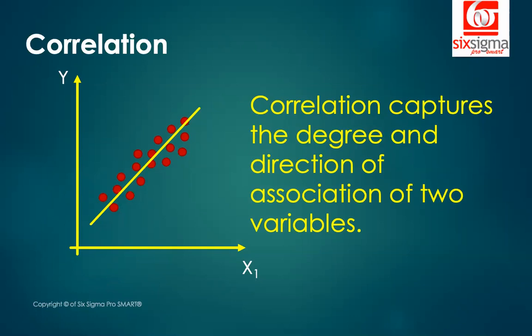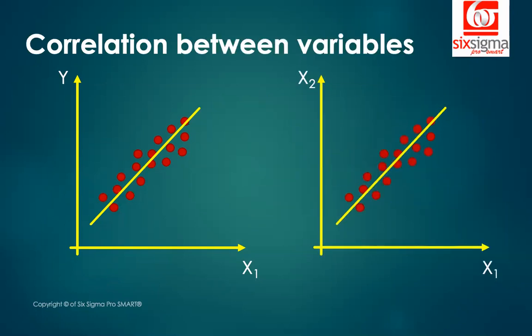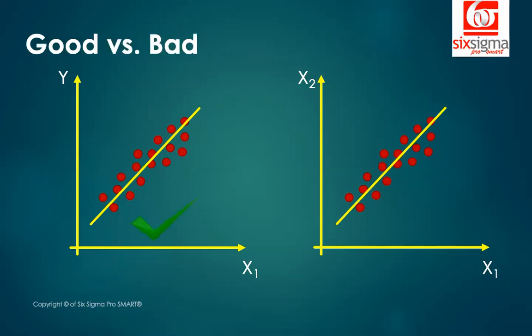We understand what correlation is, but do we treat it differently when we talk about correlation between y and x versus two independent variables? The fact is that we are always very happy to see a correlation between an outcome of interest and an explanatory variable. But we are often not happy when we see two independent variables correlated. Why is that so? Let's try to understand that.